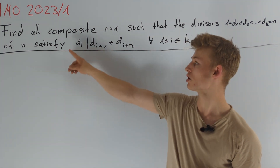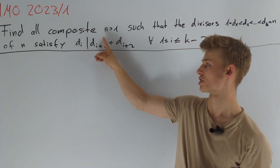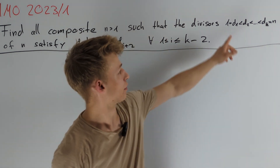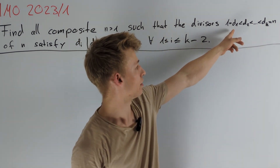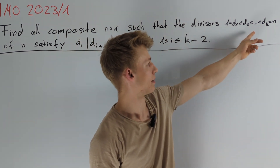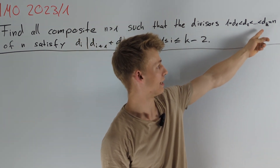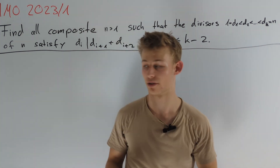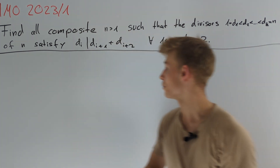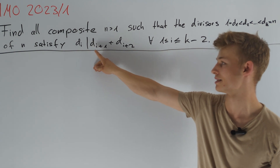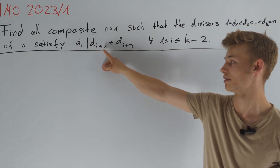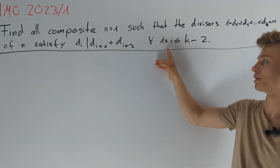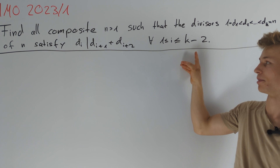We are asked to find all composite integers n greater than 1 such that if 1 = d1 < d2 < ... < dk = n are the divisors of n, we have that di divides di+1 plus di+2 for all i between 1 and k minus 2.